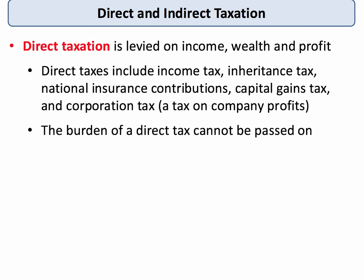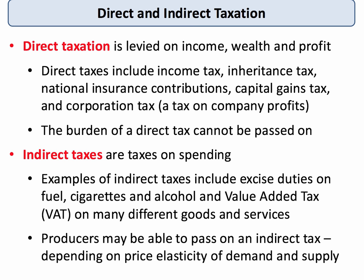Direct taxes are taxes levied on income, on wealth, and on profit. Good examples include income tax, inheritance tax, national insurance contributions, and corporation tax paid on profits. The key point about a direct tax in theory is that the burden cannot be passed on — my tax liability is my tax liability; I can't pass it on to somebody else.